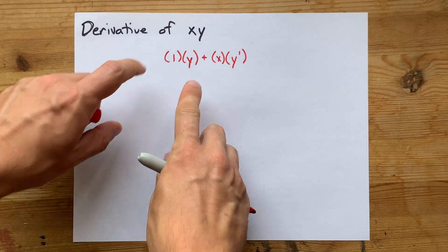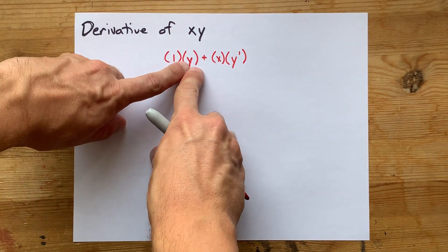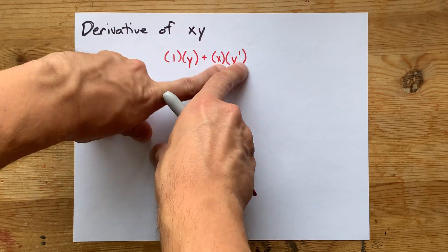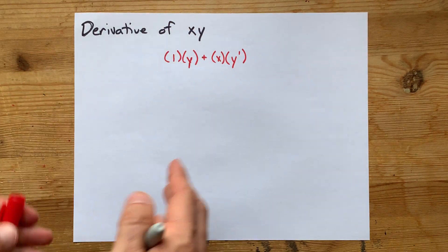Now, again, that's the product rule. Derivative of that times that as is, plus derivative of the second thing times the first one as is.